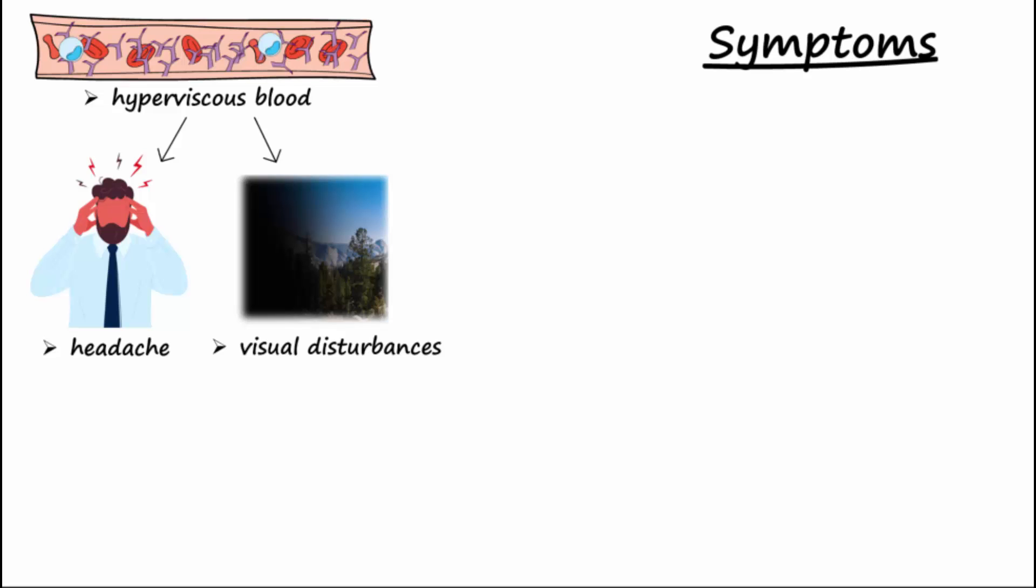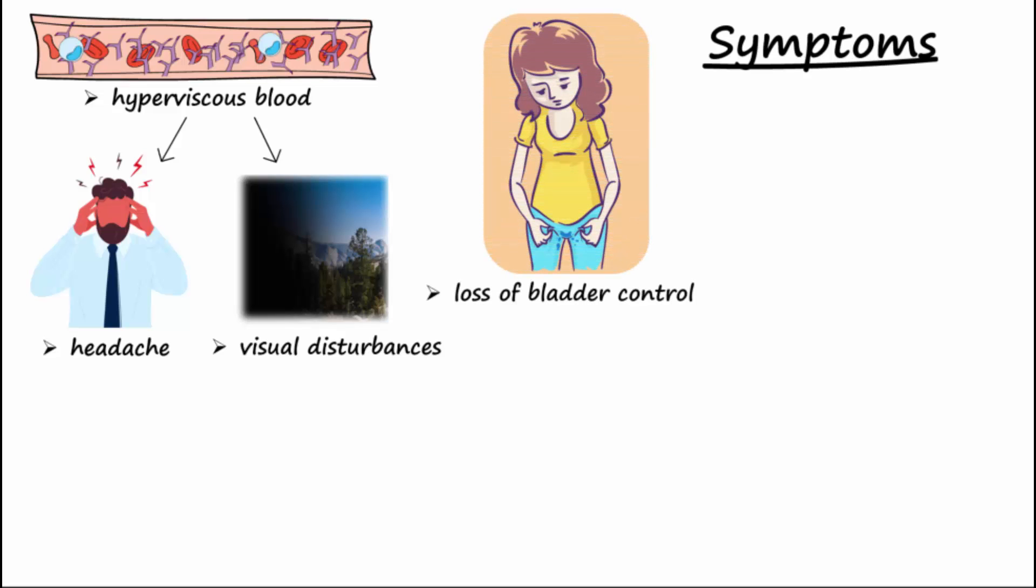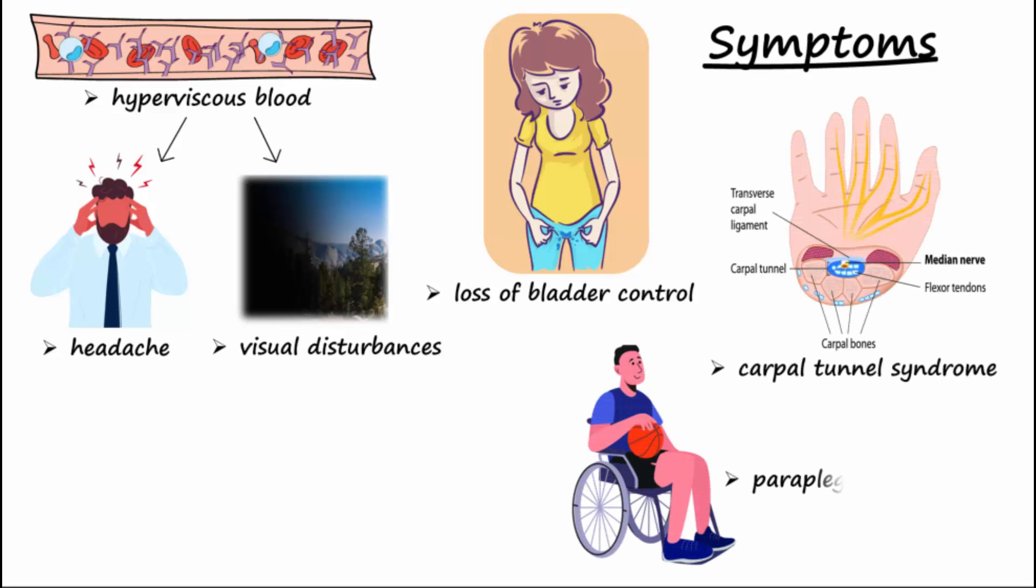Loss of bowel or bladder control may be due to compression by the plasmacytomas on the spinal cord. Infiltration of nerves by amyloid can cause neuropathies like carpal tunnel syndrome and paraplegia.